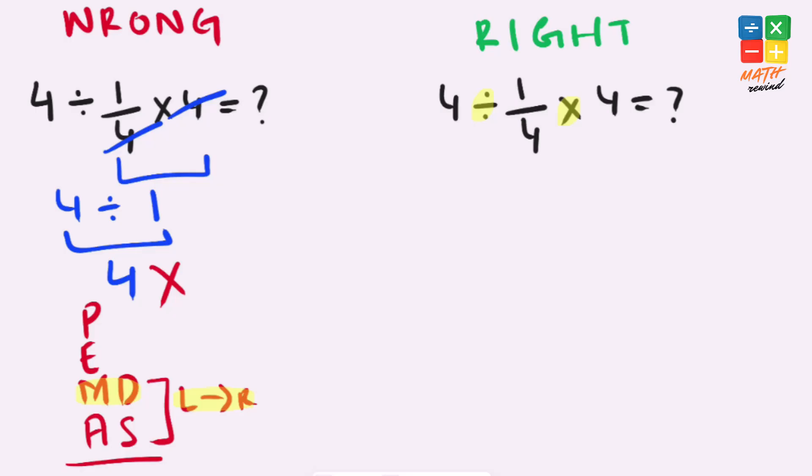We need to solve this part of the expression first. If you notice we have a fraction available here, and to make our lives easier to solve it, we can use the KCF rule. K means we keep 4 as it is.